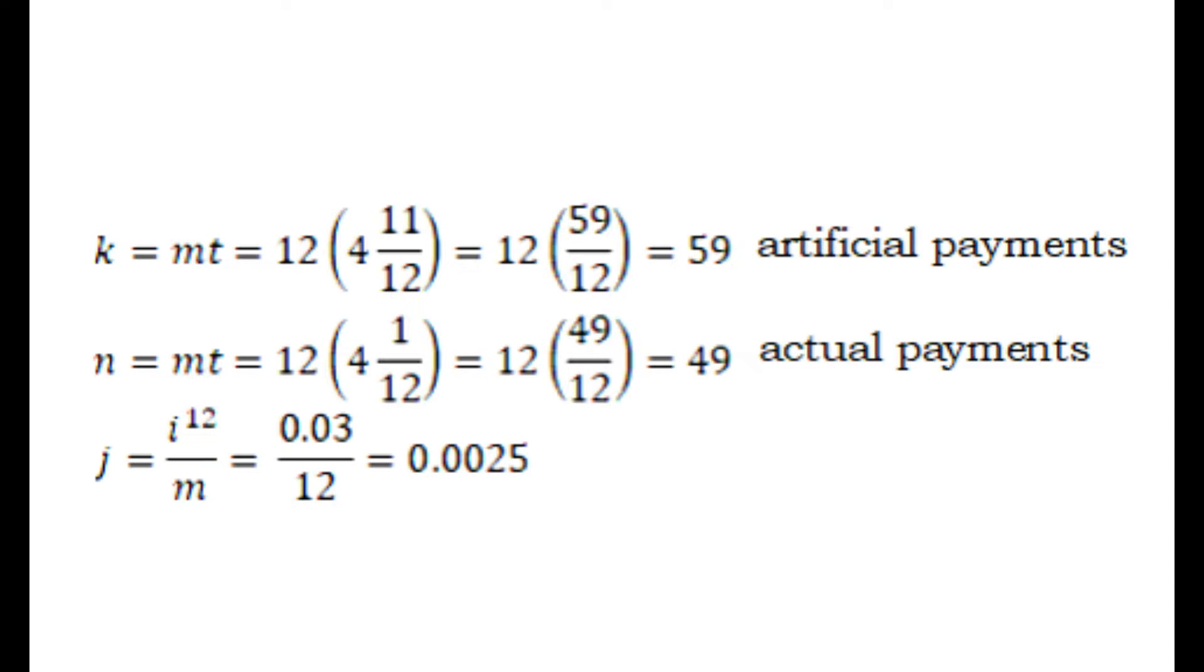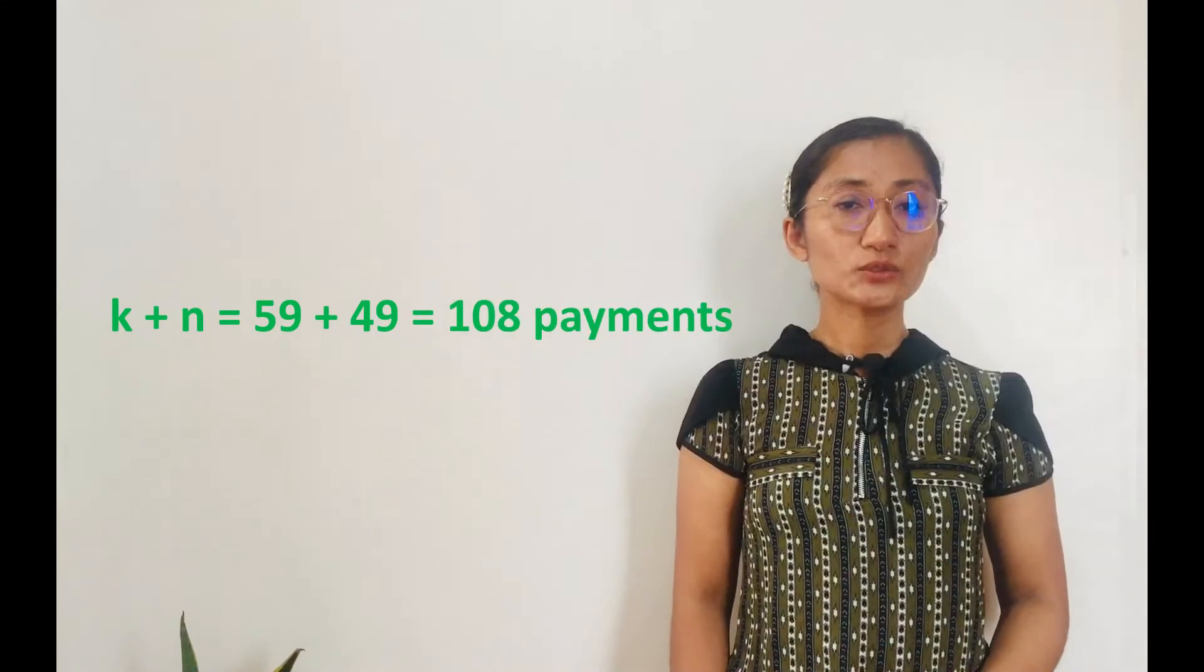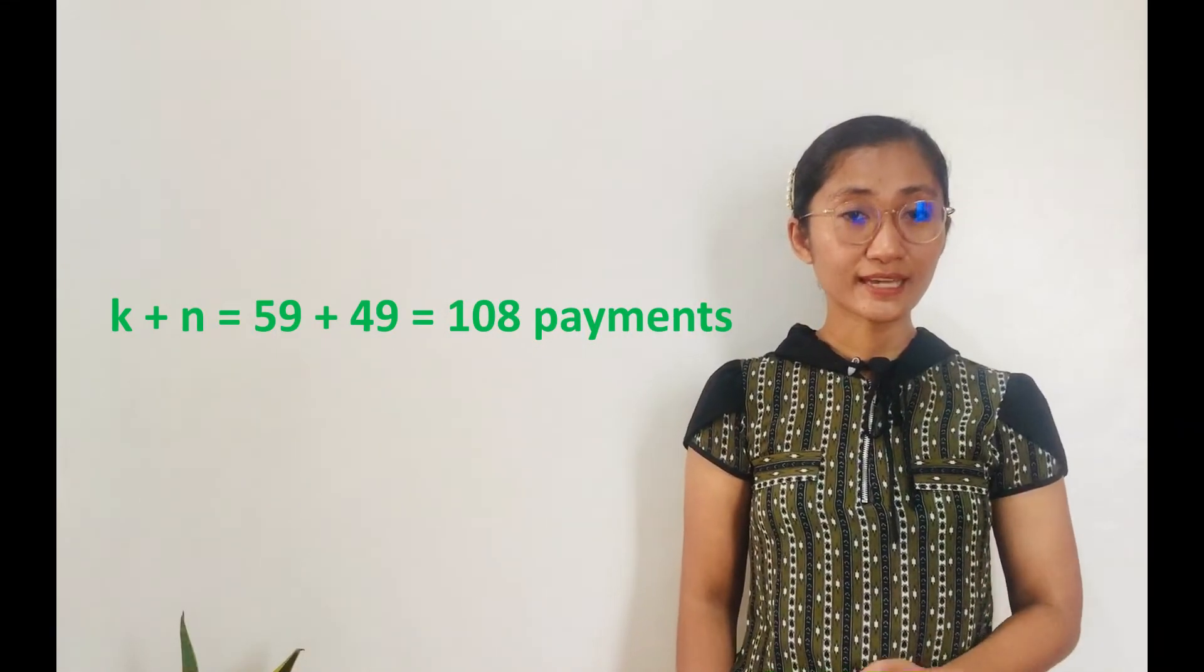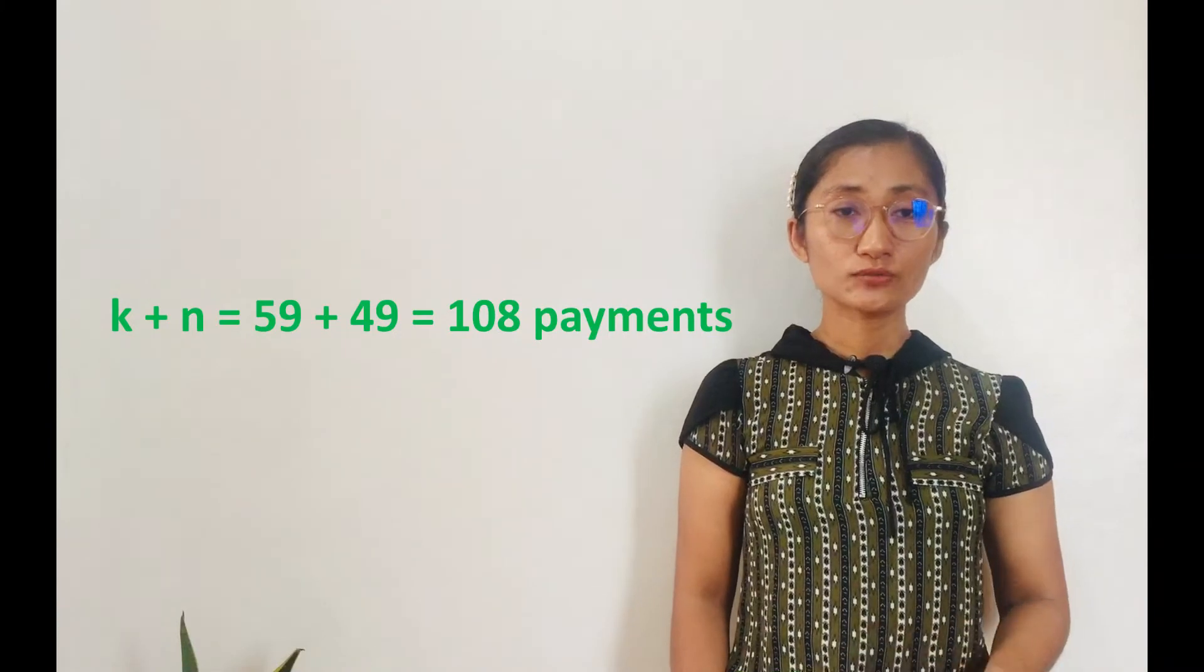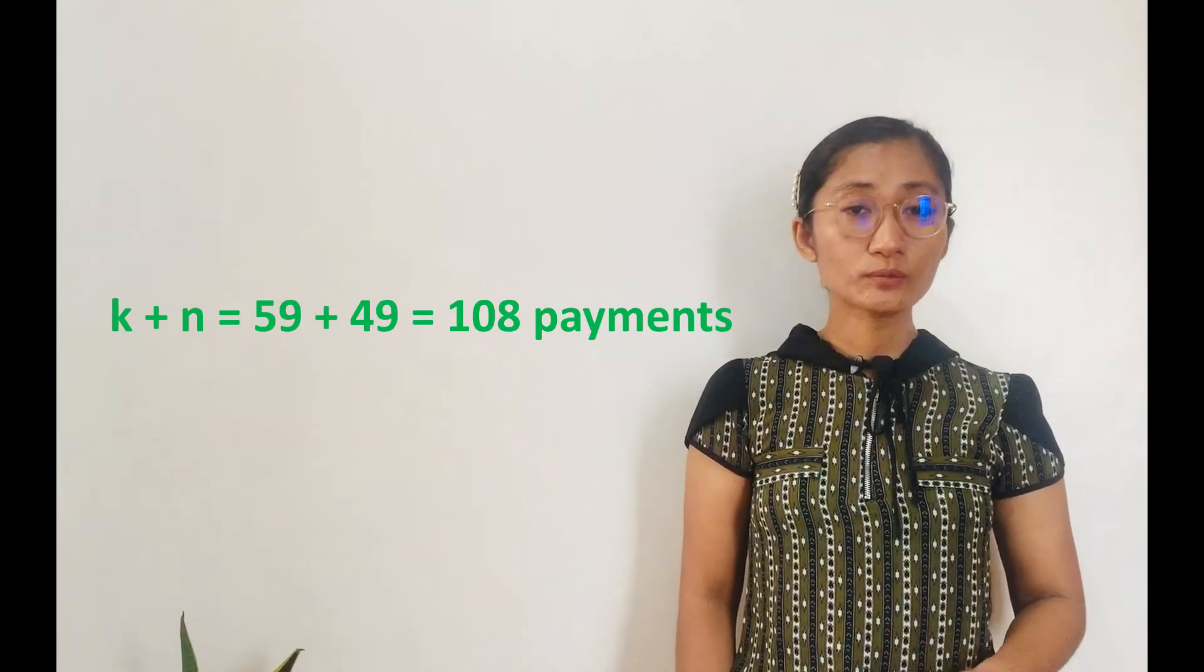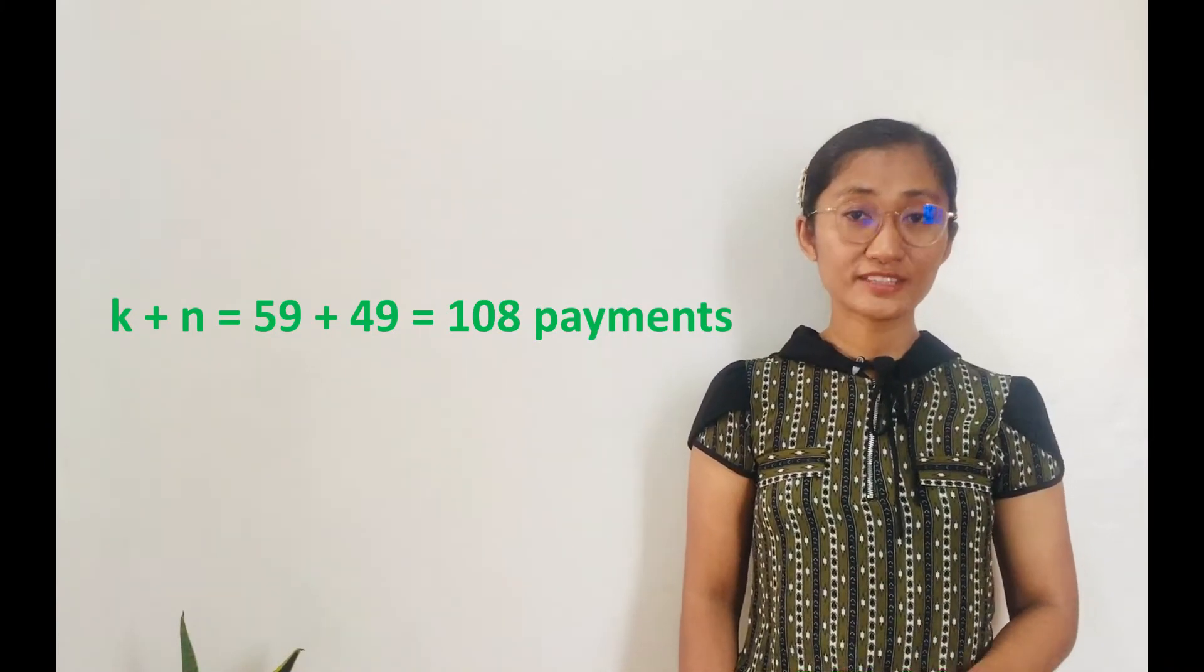For the value of J, we have I to the 12 over 12. Our I to the 12 is given already. It's 0.03 divided by 12. Therefore, the value of J is 0.0025. The period of deferral is 59 periods or 59 months. Thus, there would be a total of K plus N equals 59 plus 49. There would be a total of 108 payments.